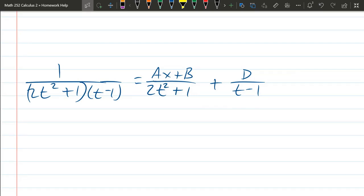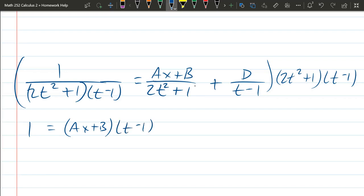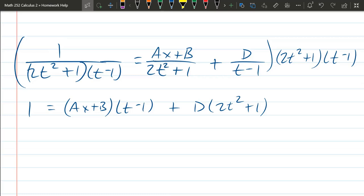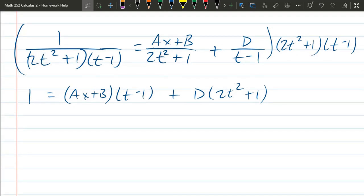How do you solve for a, b, and d? You multiply everything by all the denominators. So the left side just cancels out to 1. Right side, ax + b times t - 1 plus d times 2t² + 1. Two ways to figure out the a, b, and d constants. You can plug in t values, or you can match coefficients. I see a very easy t value to plug in. Let t equal 1, because that's going to zero this out.